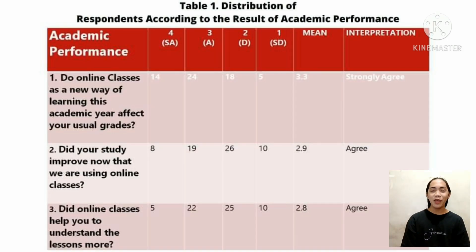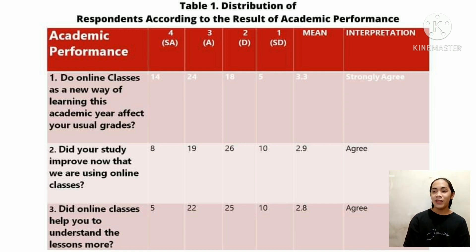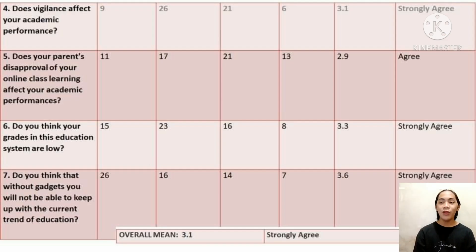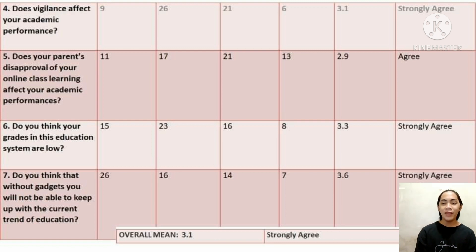As you can see in Table 1, it shows the distribution of the respondents according to the result of academic performance in factors affecting academic performance. Four of the questions have been equal to strongly agree, while the other three have been equal to agree. With the overall weighted mean of 3.1, we interpreted it as strongly agree. The factors in statement number 2 affect the academic performance of Grade 11 students.